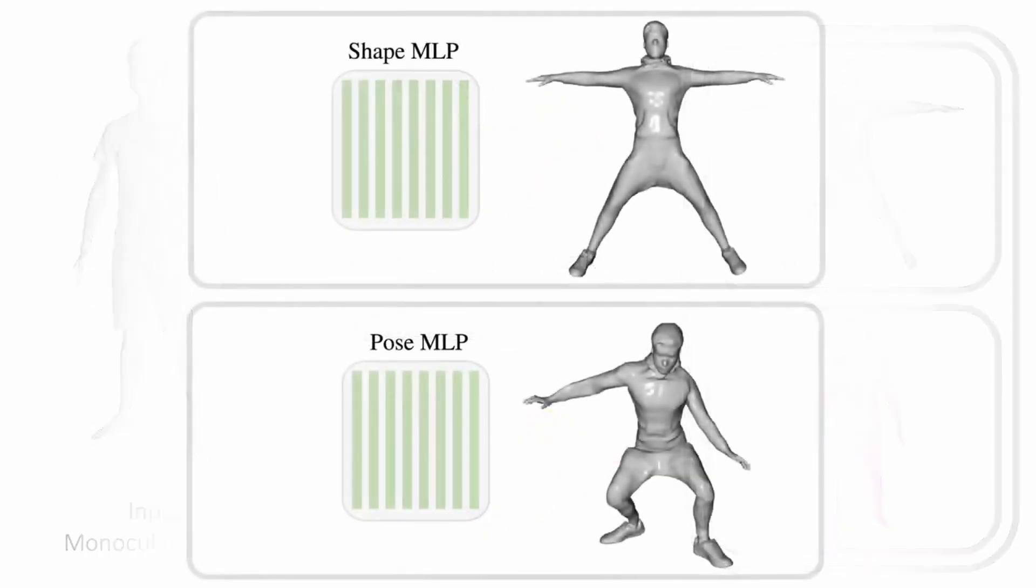To learn NPMs from a dataset, this should follow two simple constraints. Each shape identity is posed canonically, and second, each shape identity has several posed or deformed instances for which dense surface correspondences to the canonical shape are available.